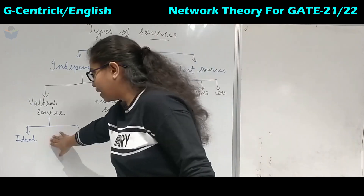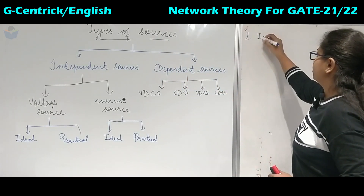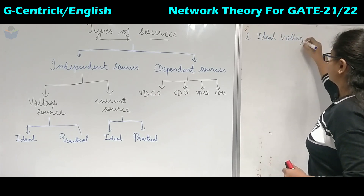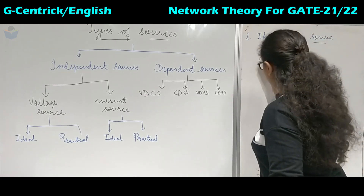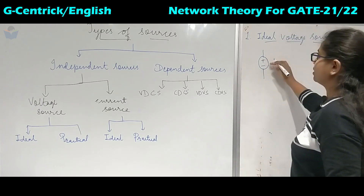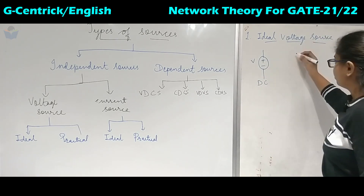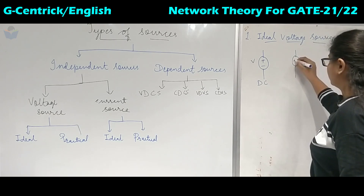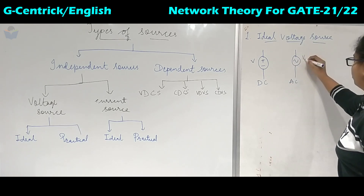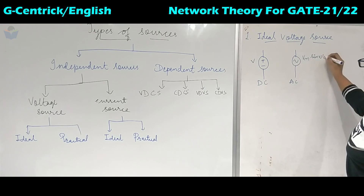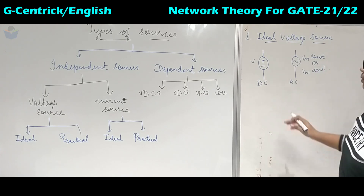First we will start with the ideal voltage source and see how we represent it symbolically. For DC, we represent it with a circle and a plus-minus sign. If it is AC, the symbol contains a sinusoid — Vm sin(ωt) or Vm cos(ωt). This is the symbolic representation of the voltage source.